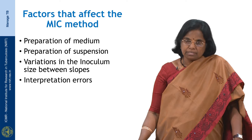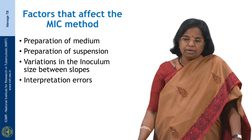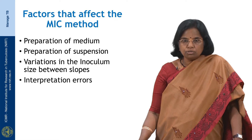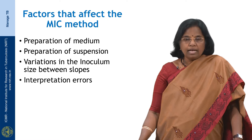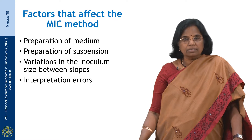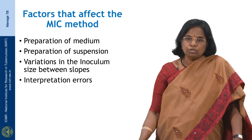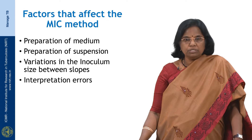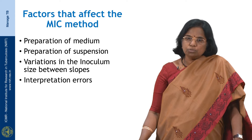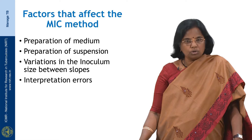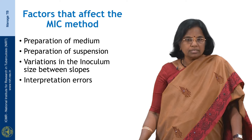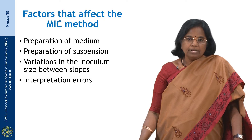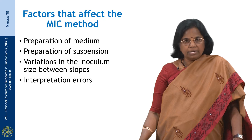The factors that may affect the MIC method are: first, preparation of the medium — a stock solution of the drug is prepared and dilutions are made to achieve different drug concentrations in the slopes, and any errors in preparation can result in erroneous results. Second is preparation of the suspension — a uniform suspension is required, and the presence of even a small clump can result in wrong results. Third is variation in the inoculum size between slopes, which can also affect the results. Finally, technical errors which could result in interpretation errors.